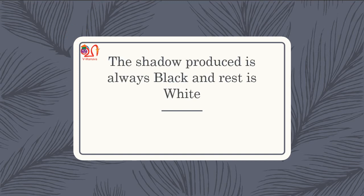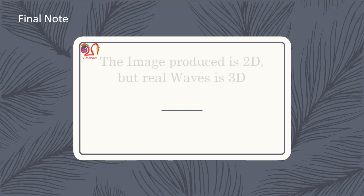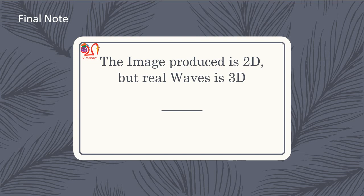The shadow produced is always black and white. To have a color image, place a prism near the slit. Final note: the image produced is always 2D, but the real waves are 3D. Proper use of these techniques provides good results.